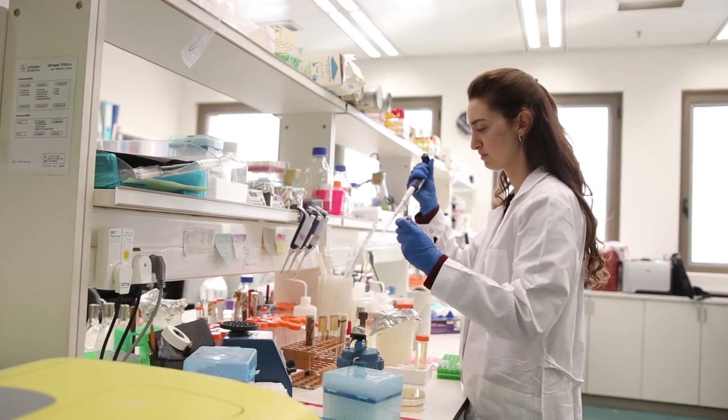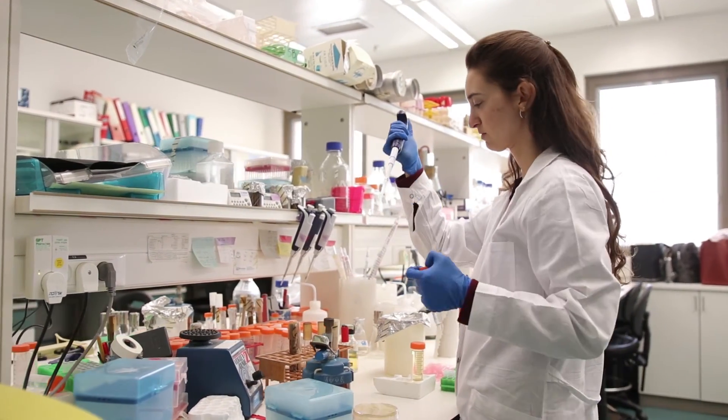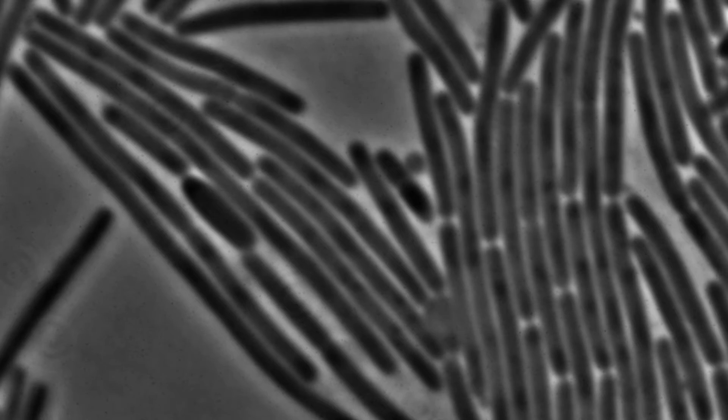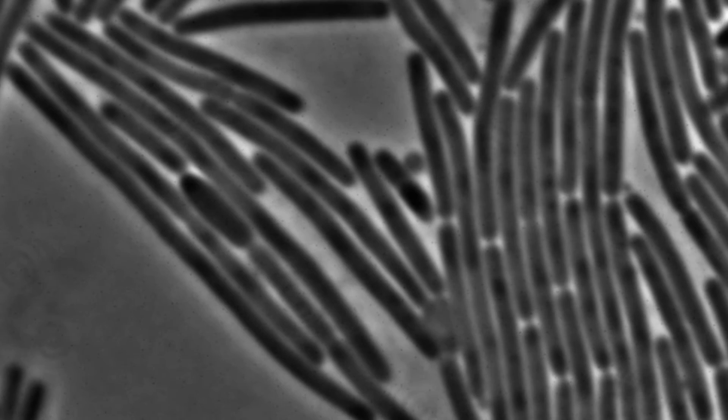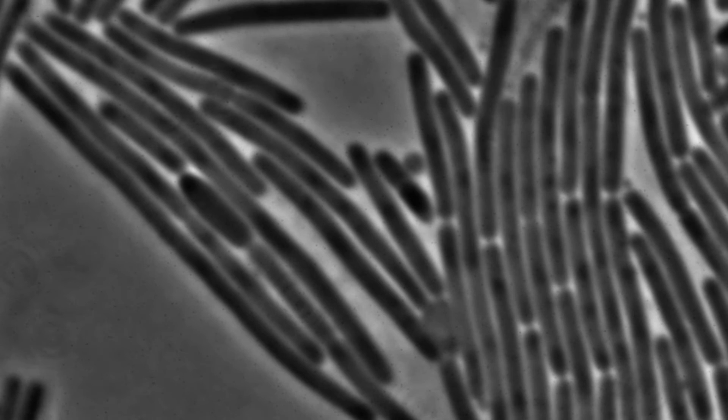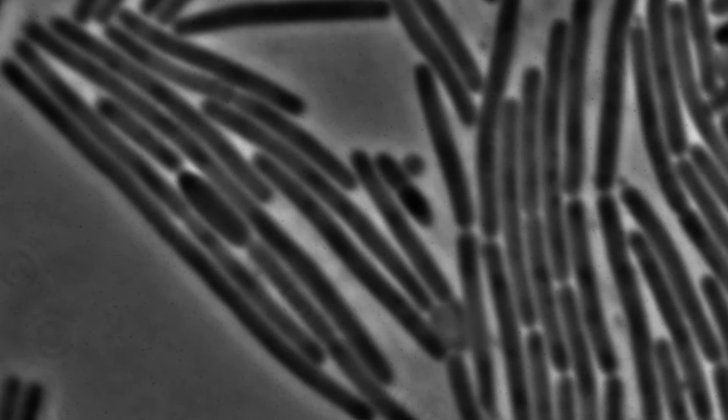Lytic phages bind to the host's surface receptor, inject their DNA, exploit the host's machinery to produce phage components, then they destroy and lyse the cell, releasing new phage particles.